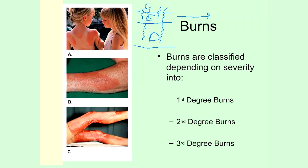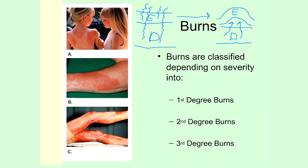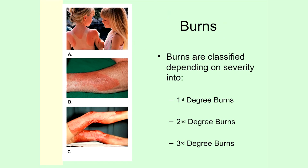When damage reaches the dermis, remember that blood vessels are located there. Those blood vessels start to leak fluids. Because the epidermis is actually impenetrable to fluids, those fluids leak out of the dermis, can't get through the epidermis, and sit in that layer between the epidermis and dermis, separating them from each other. That's what a blister is — and that's why blisters are a hallmark of a second degree burn, indicating that dermal damage has occurred.